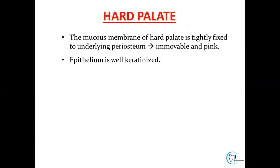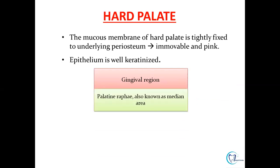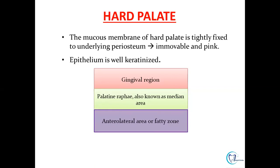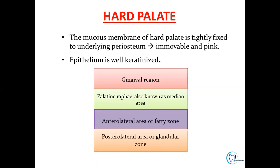The hard palate is tightly fixed to the underlying periosteum, immovable, pink, and well keratinized — the epithelium is keratinized stratified squamous. There are four histological zones of hard palate: the gingival region, the palatine raphe or median area, the anterolateral area or fatty zone, and the posterolateral area or glandular zone. These zones are a frequently asked viva question.